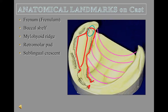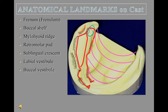The labial vestibule extends from canine to canine and the length of the denture in this area is largely determined by the mentalis muscle. The buccal vestibule runs roughly from the canine area to the retromolar pad. The scooped-out area in the distal buccal flange is due to the influence of the masseter muscle pushing on the buccinator and dislodging the denture superiorly. This notch is placed in the denture to prevent it from being displaced, sometimes called the masseteric notch or groove.